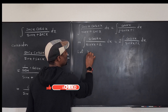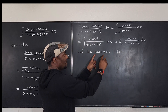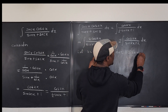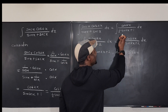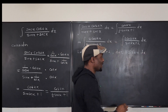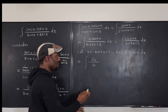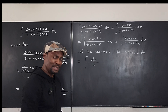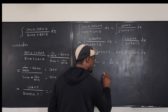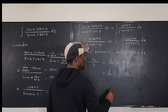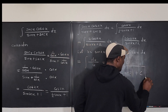Let u = sin 2x + 2, so that du = 2 cos 2x dx. The 2 cos 2x in the numerator is exactly du, and the denominator is just u. So the integral becomes ∫ du/u, which equals ln|u| + C. Substituting back, u = sin 2x + 2, so the final answer is ln|sin 2x + 2| + C. That was so easy — that's the answer.